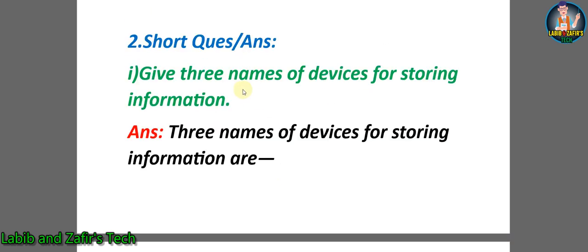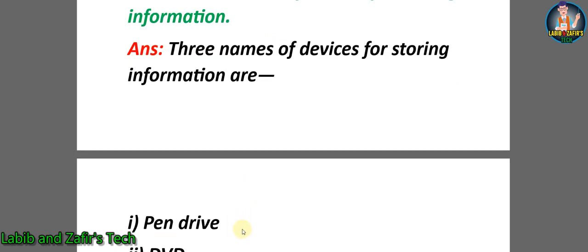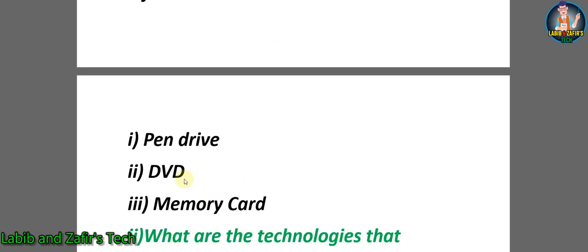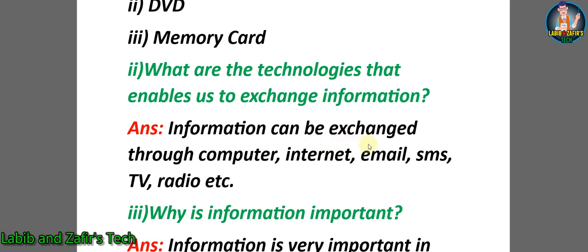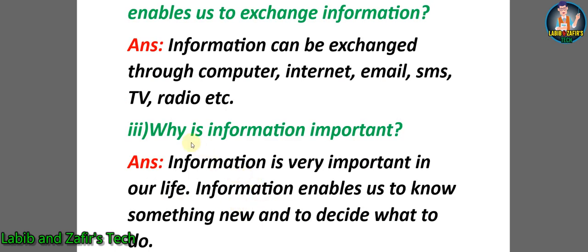Now let us go through some short question answers. Number one: give three names of devices for storing information. Answer: three names of devices for storing information are — one) pen drive, two) DVD, and three) memory card. Second question: what are the technologies that enable us to exchange information? Answer: information can be exchanged through computer, internet, email, SMS, TV, radio, etc.